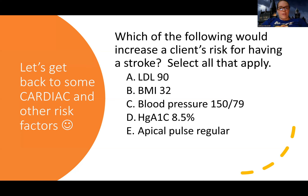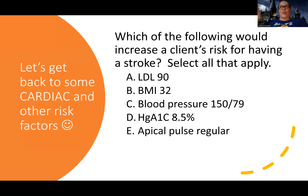Hemoglobin A1c of 8.5 — this is elevated, meaning diabetes. Would diabetes put me at risk for stroke? Stroke is a flow problem, a vascular problem. Diabetes and poor glucose control breaks down blood vessels. If blood vessels are broken down, they won't function well, which can cause flow issues that could lead to a stroke.